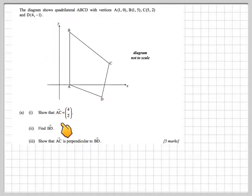Show that the vector AC is (4,2), find the vector BD, and show that AC is perpendicular to BD. So if we annotate the diagram first of all by putting the coordinates on, we have to show that the vector AC is (4,2).